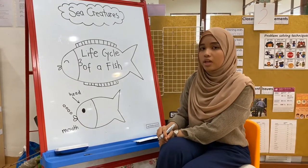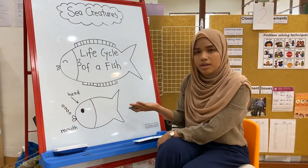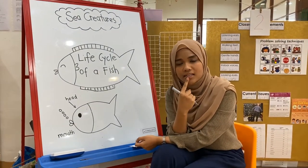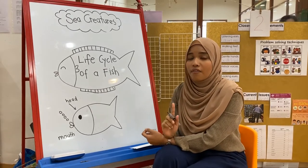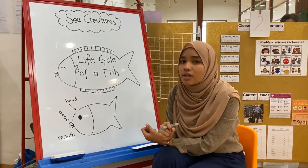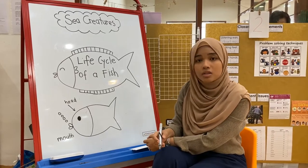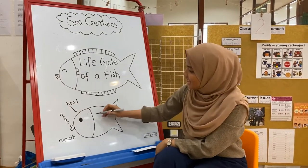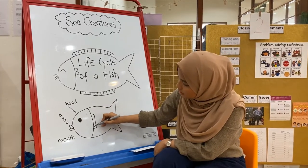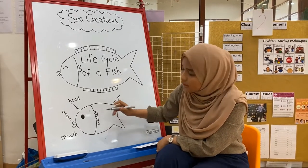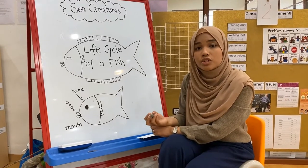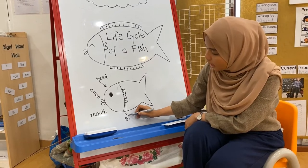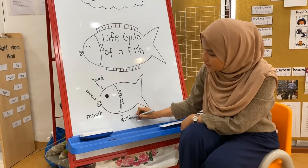Now, how do you think a fish breathes? Do you think they breathe through their nose and mouth like us? Fishes have a special part of their body that helps them to breathe — that's called gills. One more time with me: gills. So I'm going to draw the gills over here. Gills help fishes to breathe. Now, how do we spell gills? G-I-L-L-S. Gills.